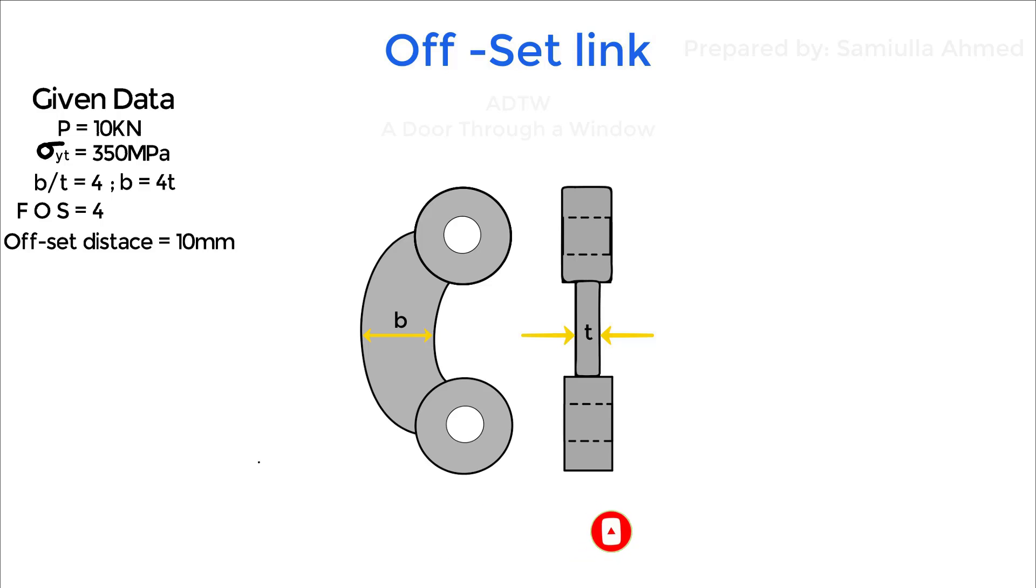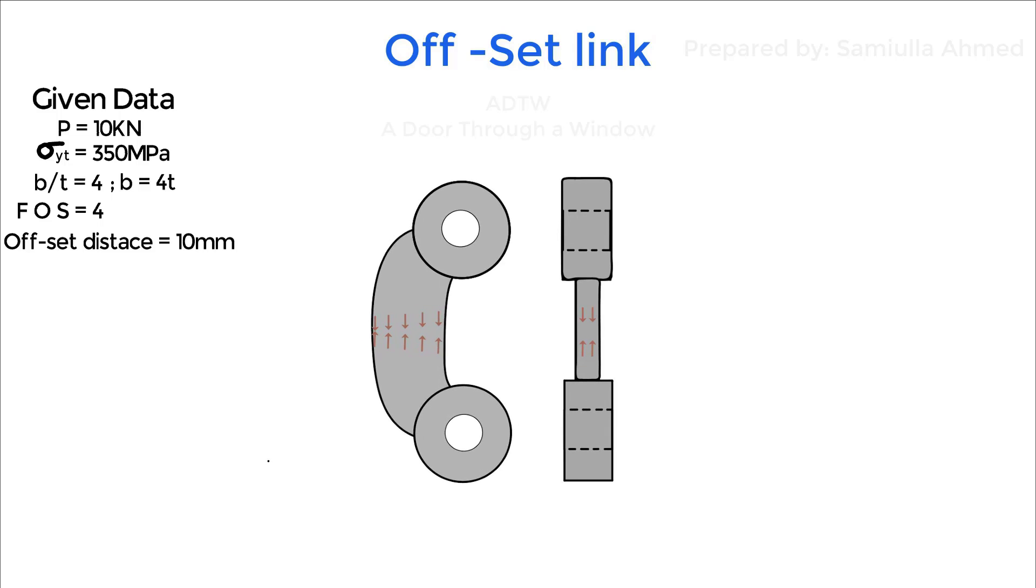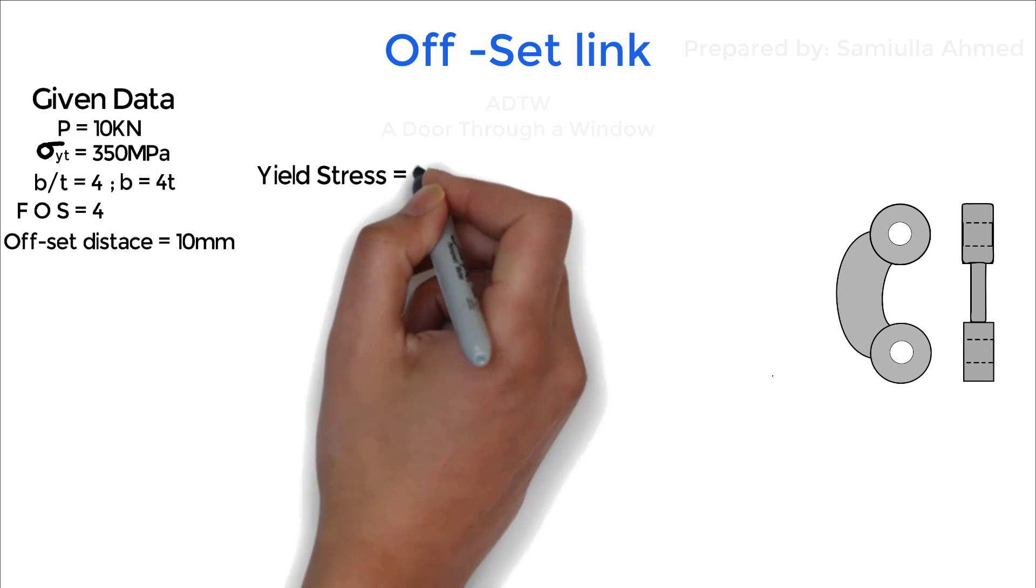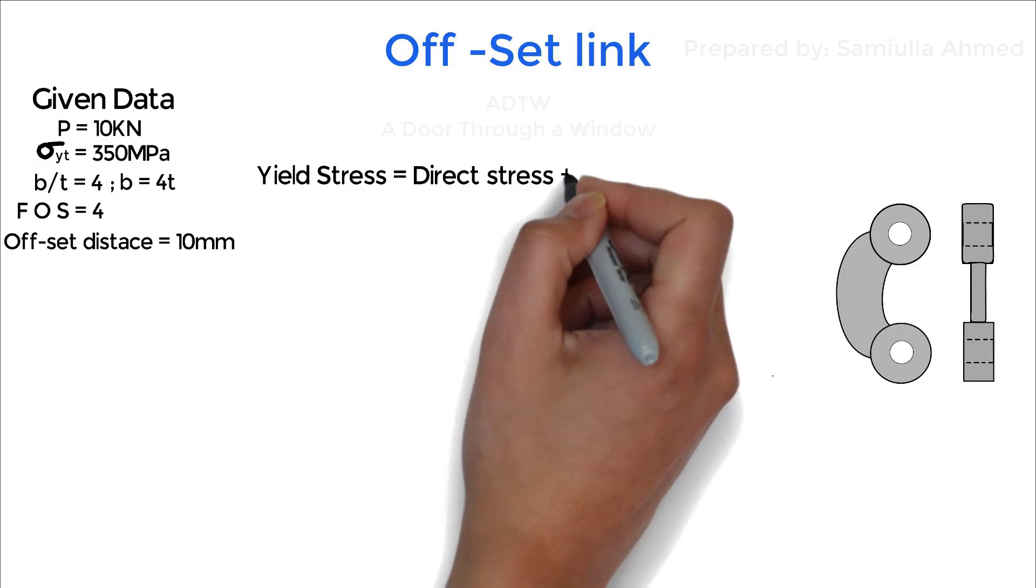In this problem, first we need to find out the total stresses acting on the link. The stresses acting on link are of two types: stress due to direct force and stress due to bending.